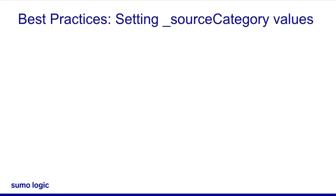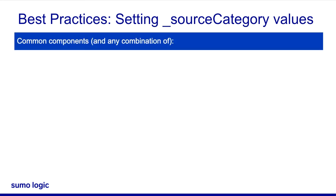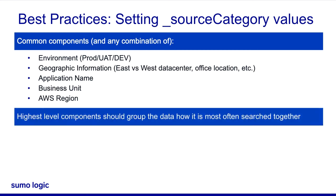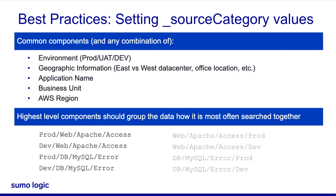Let's look at the common types of source categories. You can build high-level groupings with a variety of items — for example, you can group by environment details such as prod versus dev, geographical information such as east versus west, by application, by business unit, or any other value that makes sense for your data. The order in which you use these values is determined by how you search the data. In these examples, we are more commonly going to search by separating out production from development. You can also divide searches by web and databases.